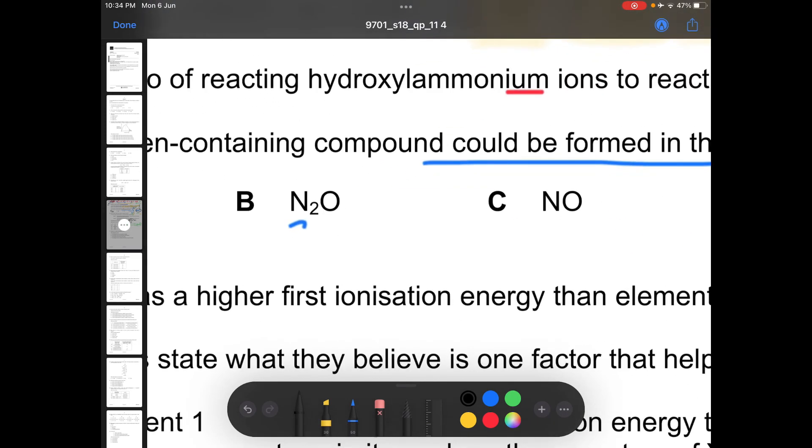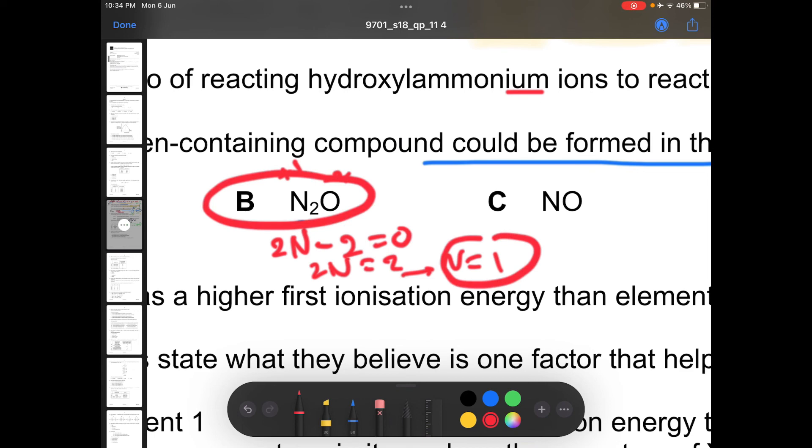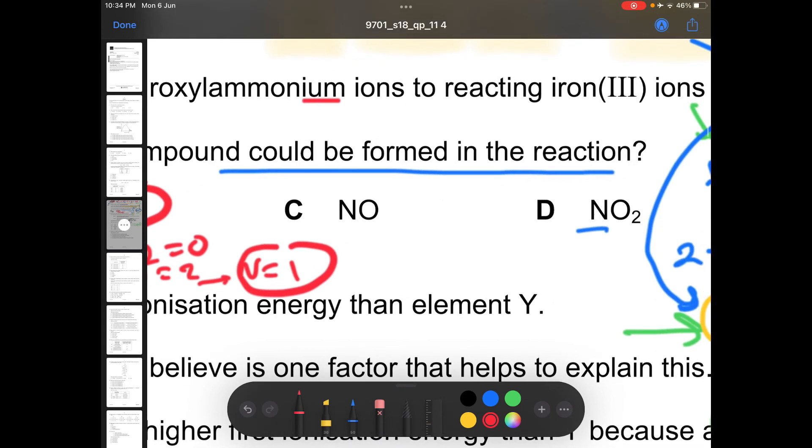And if you look at N2O, yeah, you can say 2N minus 2 equals 0. Then 2N equals 2. Then N equals 1. Nitrogen. N2O is the answer since the nitrogen atom's oxidation number is plus 1.